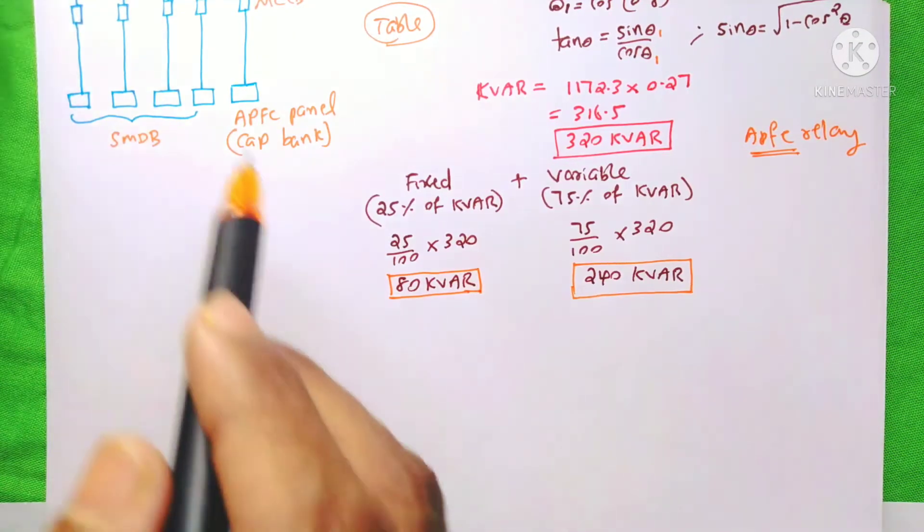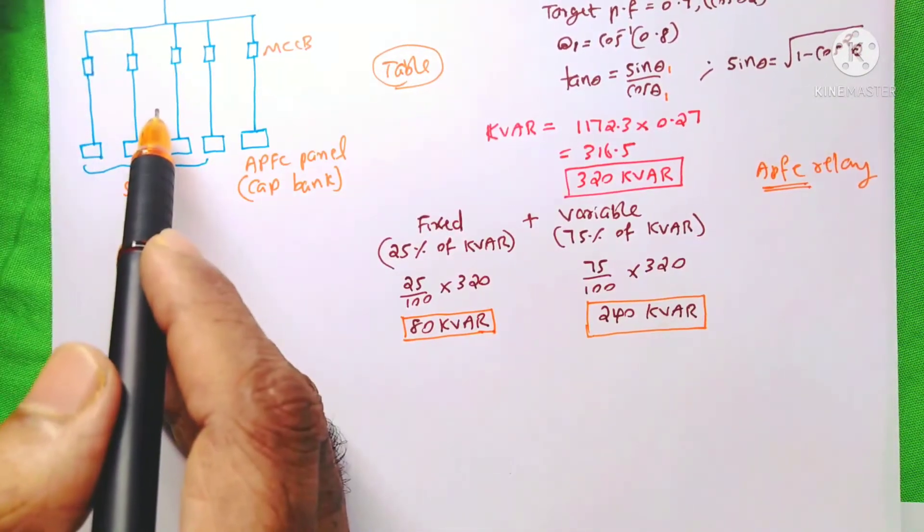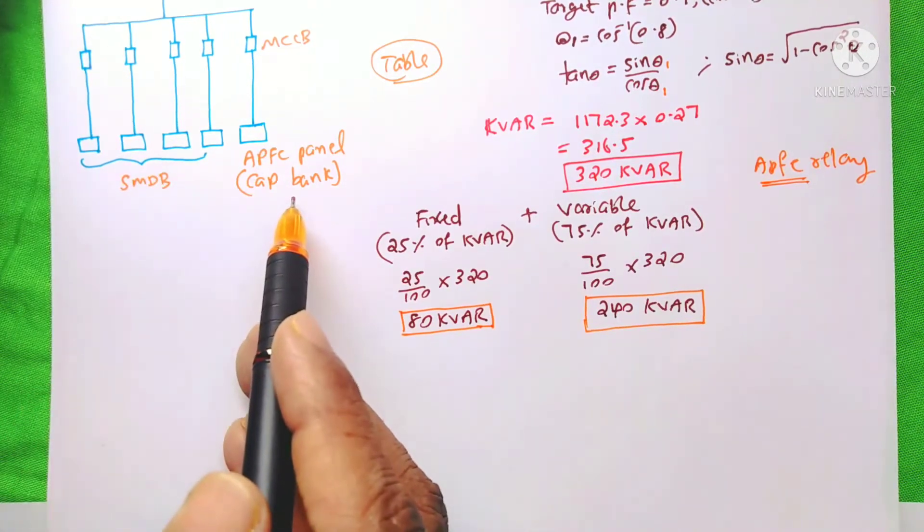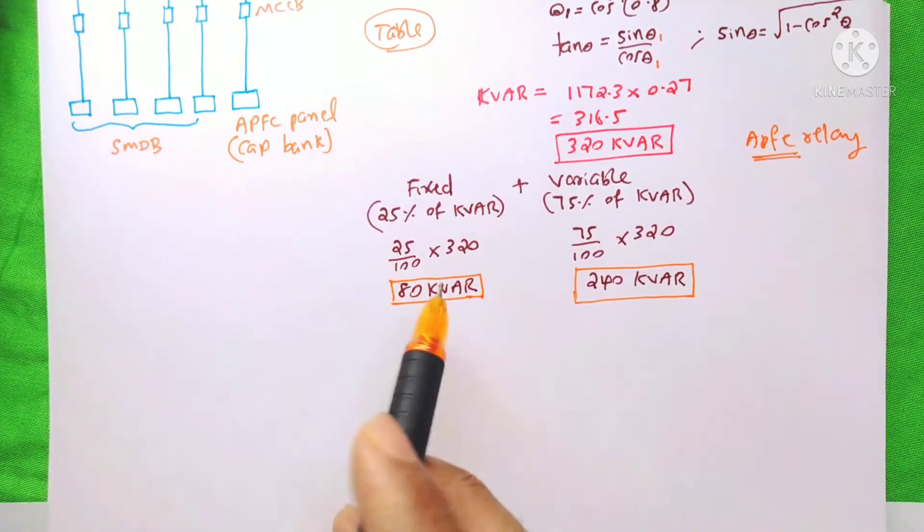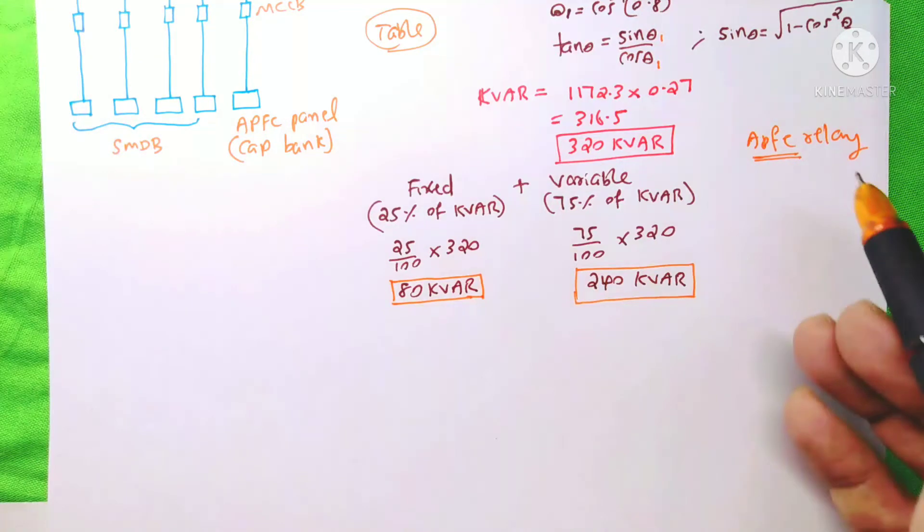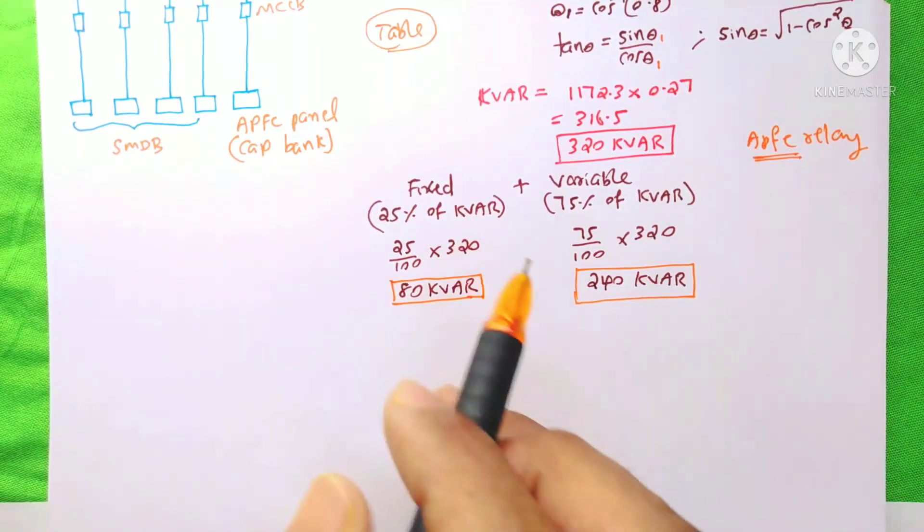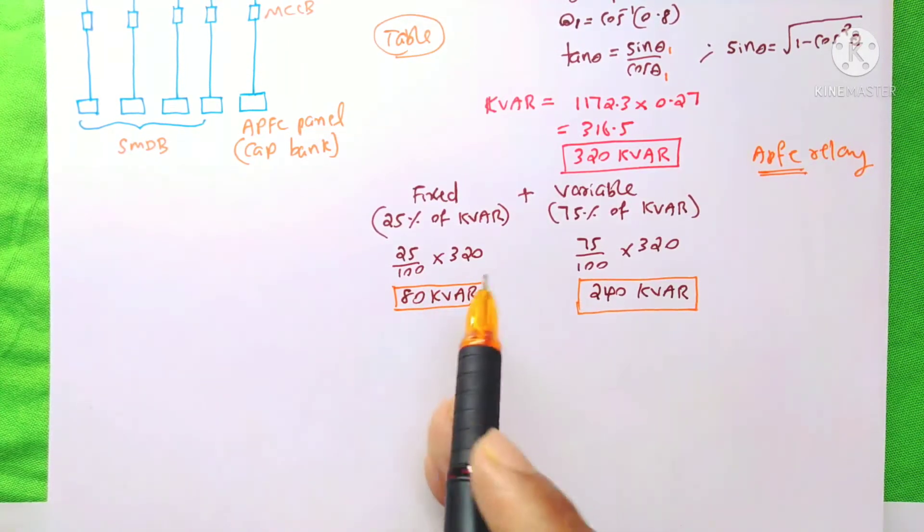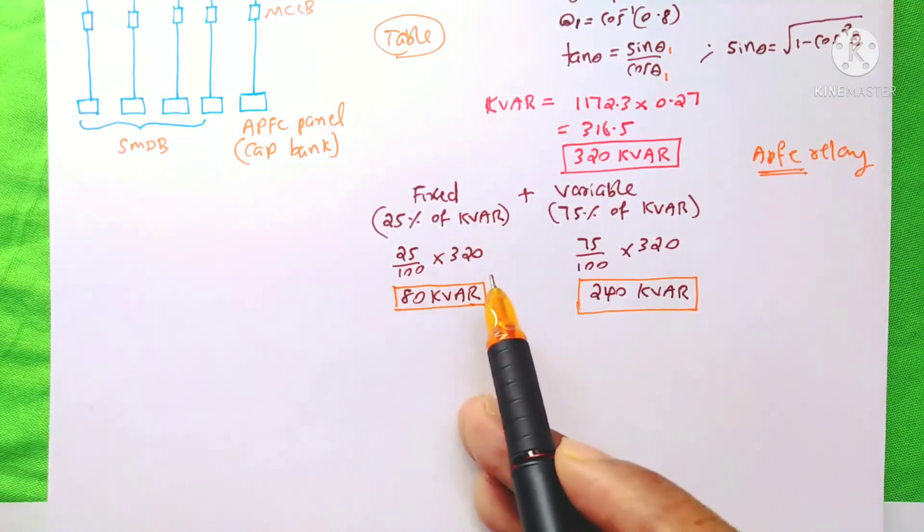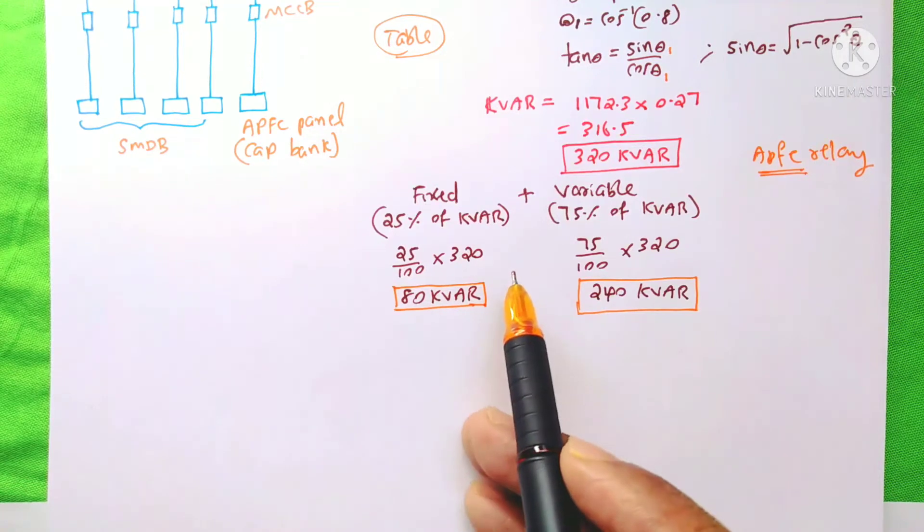It means, whenever your system is on and when your capacitor bank got the power, at that time, without the APFC relay, the fixed capacitor bank will be on the line. I will tell you the importance of this fixed capacitor bank at the end of this video.